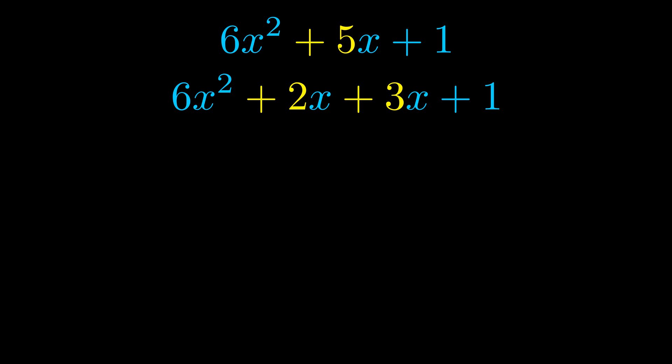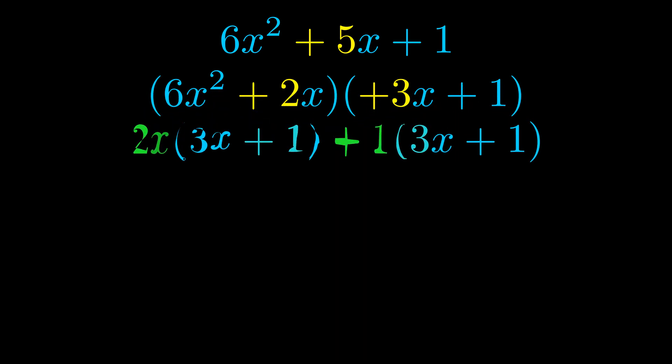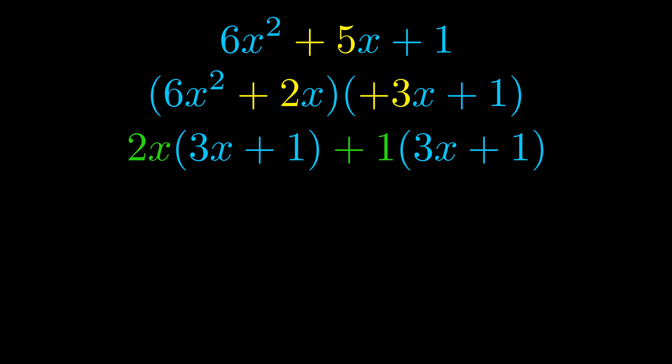Once we've done this we go ahead and we put parentheses around the first term and the last term. And we do that so that we can take the greatest common factor out of both terms. We can see the greatest common factor is now outside in green. Notice also how what remains inside of the parentheses is the same in both cases.